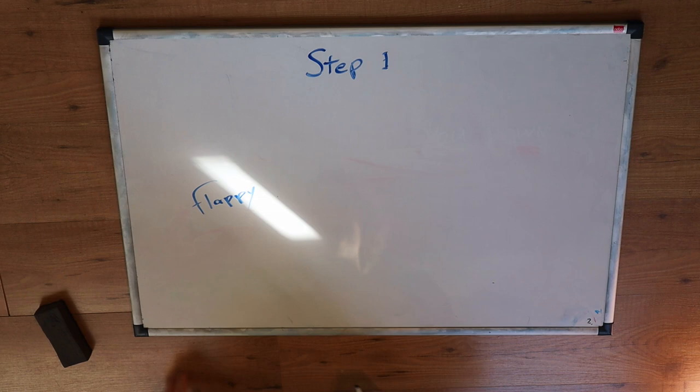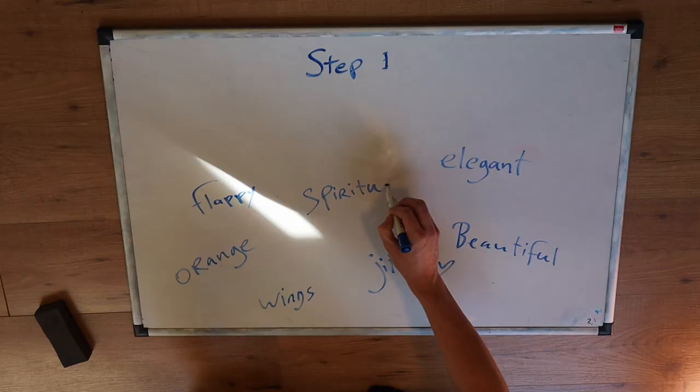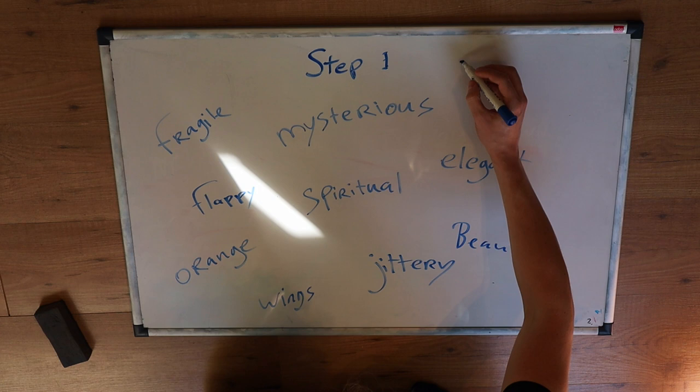So for step one, we're going to loosely associate anything you can think of about your subject. So what does it feel like? What does it do? What does it mean? Whatever comes to mind when you think about your subject, write it down. When I think about the butterfly, I'm thinking about the way it moves, the way it looks. It's fluttering, it's flappy, it's beautiful, it's elegant, it's colorful. But it's also quite fragile. And in some stories and traditions, the butterfly is seen as a spiritual being — a mysterious, otherworldly creature. So anything that comes to mind, anything you associate with your subject, write it down, and we'll move on to step number two.